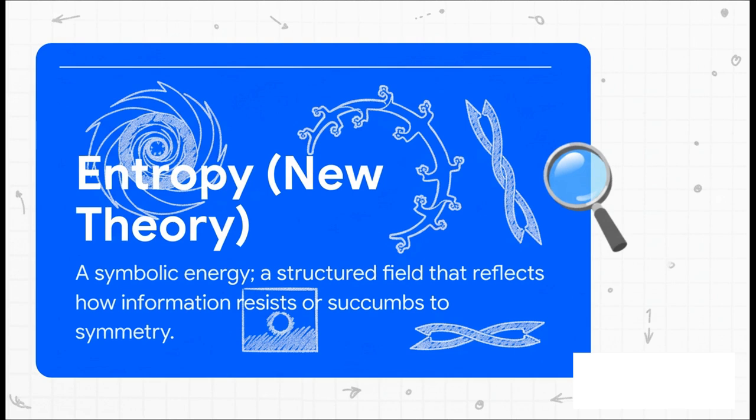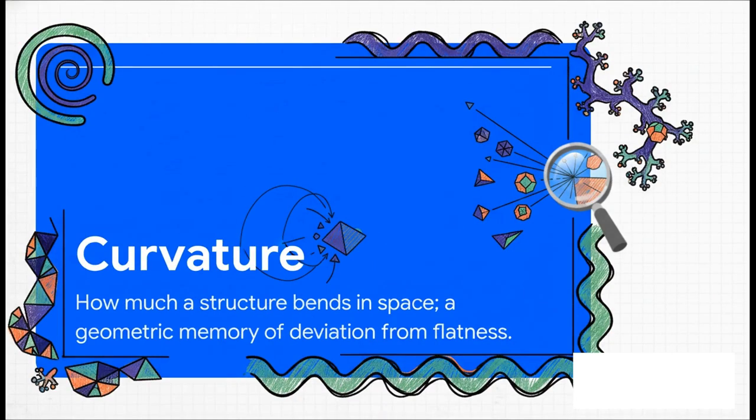Then you've got curvature. This one's a bit more intuitive—it's pretty much what it sounds like. It's a measure of how much a structure is bending away from being perfectly flat. It's almost like a memory of all the forces that have pushed and pulled it out of shape.